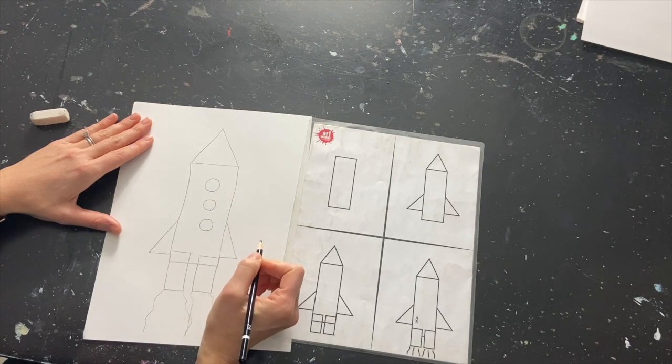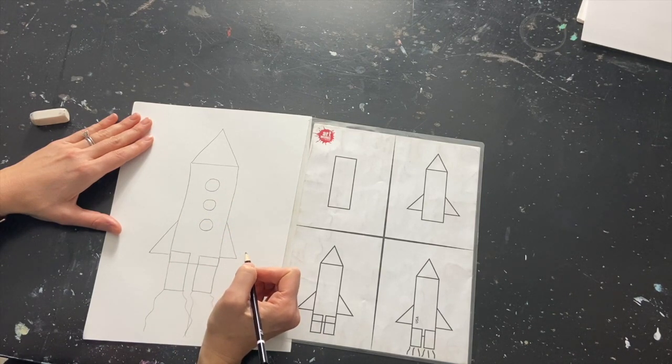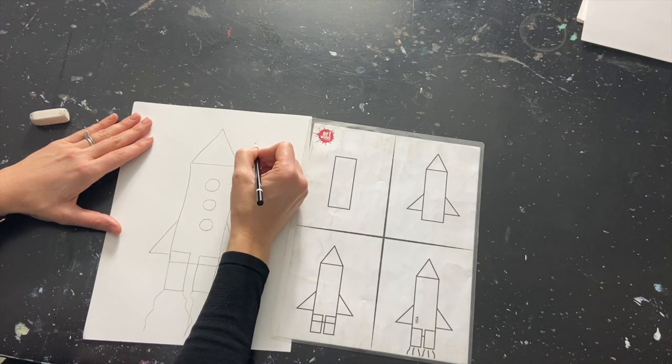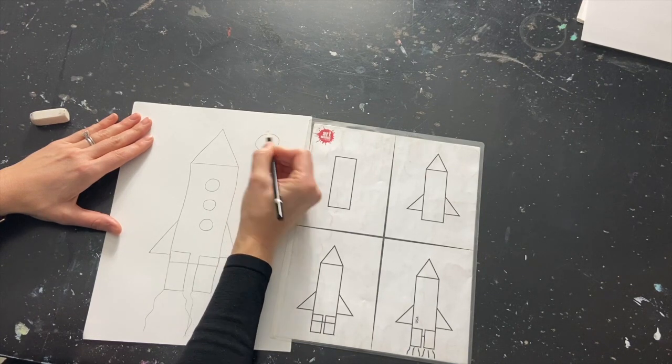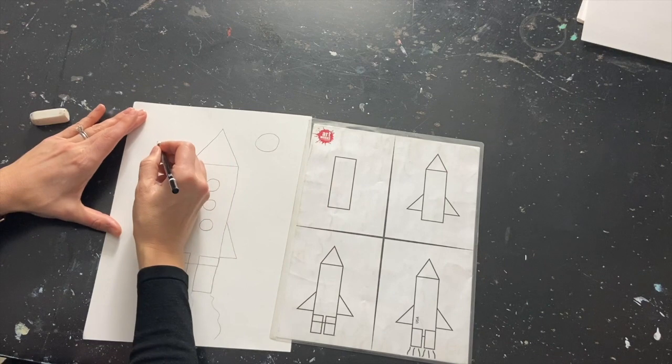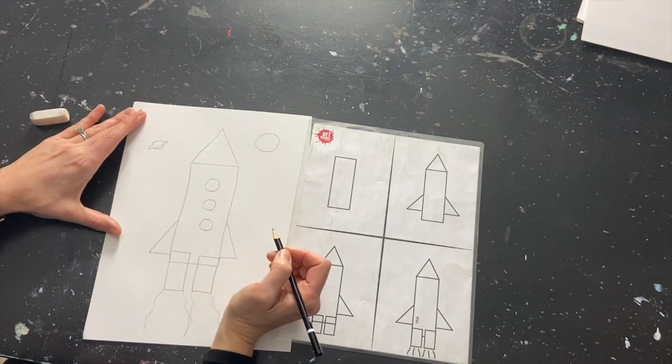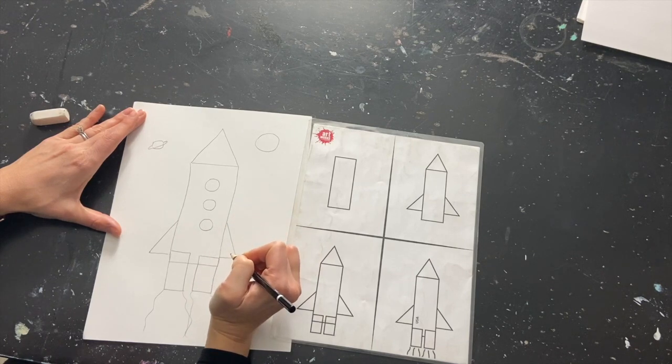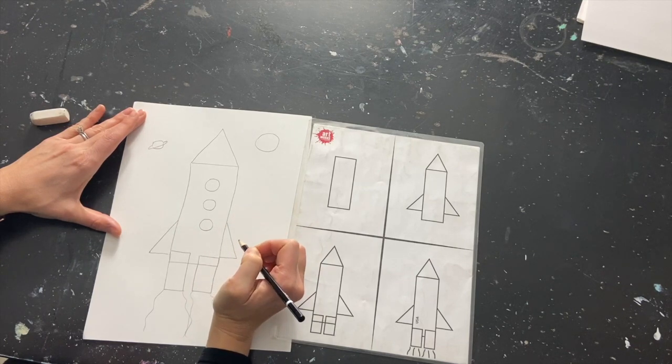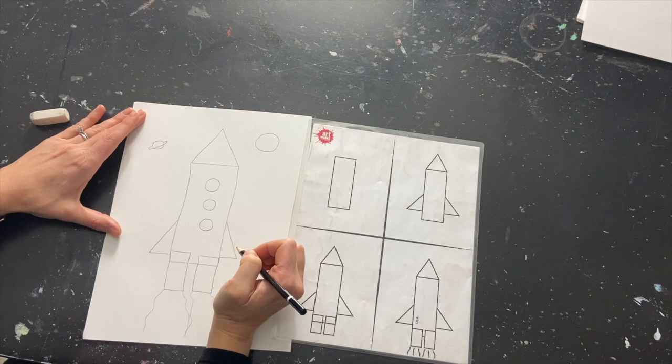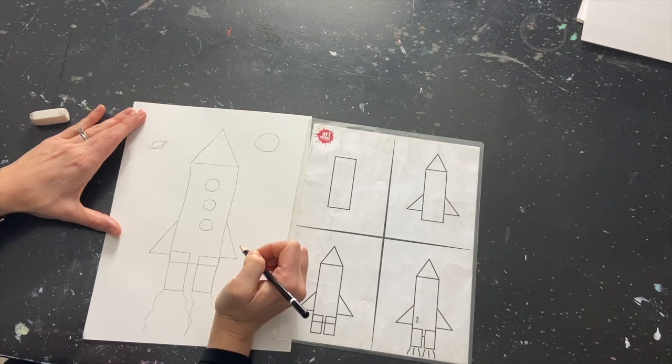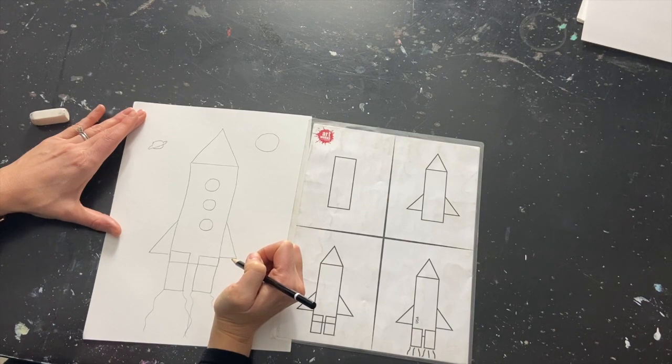Now it's time for you to get creative. Add any details that you want on your ship. Maybe you want something in the background. Maybe a Sun. Maybe planet Earth. Maybe Neptune or Saturn or a fun kind of planet. Have fun. Add all your little details and then if you have time go ahead and color it in. Use some crayons, some markers, or colored pencils. Love to see what you're working on. And there we go.